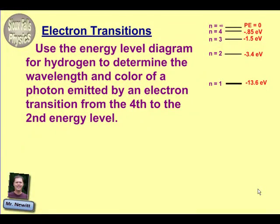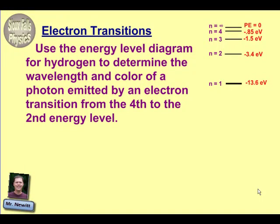All right, Sioux Falls Physics here. We're going to look at some electron transitions in this problem. It says: use the energy level diagram for hydrogen to determine the wavelength and color of a photon emitted by an electron transition from the fourth to the second energy level.